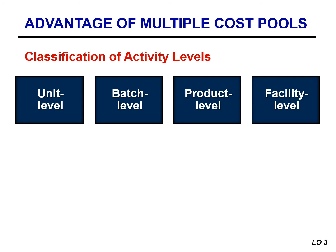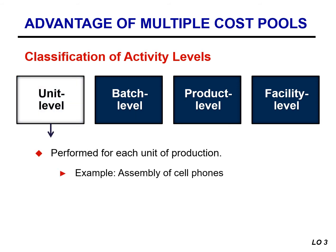To achieve this, managers often characterize activities as belonging to one of four activity level groups when designing an ABC system. Unit level activities are performed for each unit of production. For example, the assembly of cell phones is a unit level activity because the amount of assembly increases with each additional cell phone assembled.